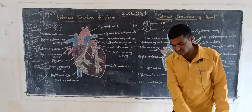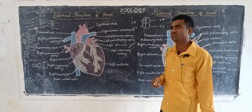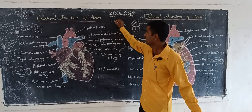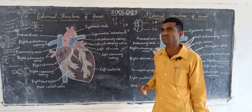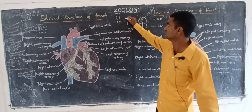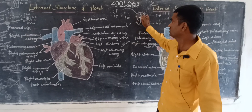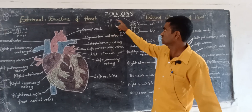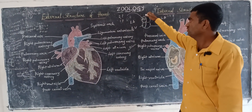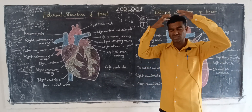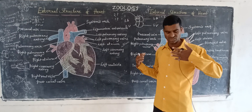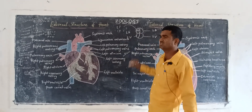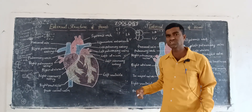The right atrium receives blood from various parts of the body through two precaval veins and one postcaval vein. The right atrium contains deoxygenated blood. The precaval veins receive blood from the head region, forelimbs region, and neck region. The postcaval vein, also called the inferior vena cava, brings blood from the posterior part of the body, such as the legs.